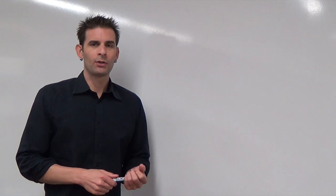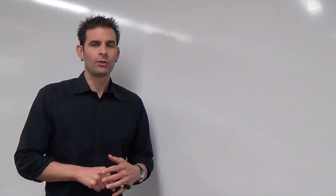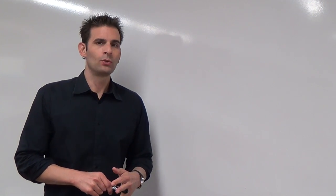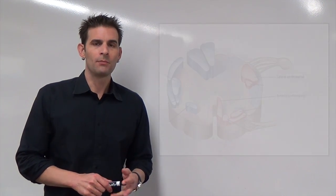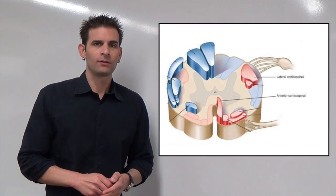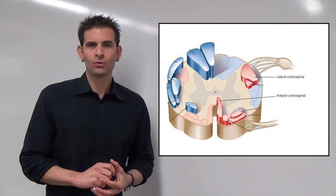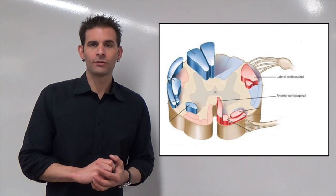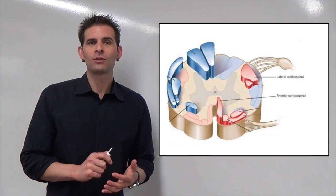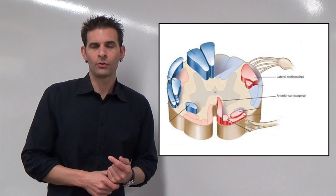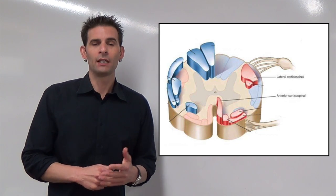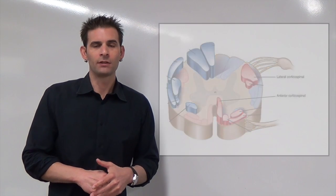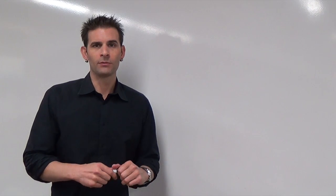The next pathway we are going to show you are your descending pathways. These are two-neuron motor pathways: the lateral corticospinal, which controls skeletal muscles of your limbs, and your anterior corticospinal tract, which controls the skeletal muscles of your axial skeleton, such as your ribs.